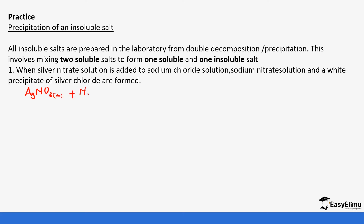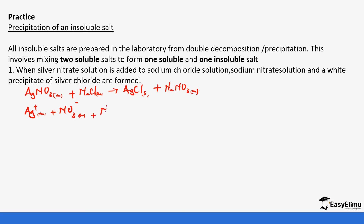Silver nitrate reacts with sodium chloride to form silver chloride — the white precipitate, which is in solid state — plus sodium nitrate in aqueous state. You can confirm the equation is balanced. The next step is to separate the cations and anions for the aqueous solutions. So we separate silver ions (Ag⁺) plus nitrate ions (NO₃⁻) plus sodium ions (Na⁺) plus chloride ions (Cl⁻) to form silver chloride. We cannot separate the solids, so silver chloride stays as is.